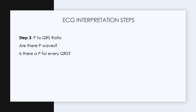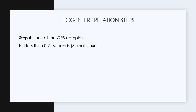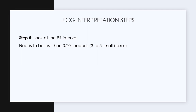Step three: is there a P wave for every QRS complex? Are there P waves, and is there a P for every QRS? Or is there a random P somewhere, or no P waves at all? Determine your P-to-QRS ratio. Step four: look at the QRS complex — is it less than 0.12 seconds or three small boxes? Step five: look at the PR interval — it needs to be less than 0.20 seconds, or three to five small boxes.